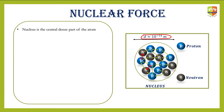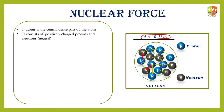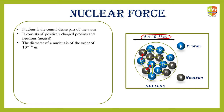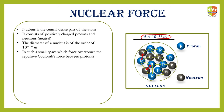The nucleus is the central dense part of the atom. Rutherford discovered the nucleus in the late 19th century, where it was figured out that every atom has a very dense part in the center called the nucleus. It consists of positively charged protons and neutral neutrons. The diameter of a nucleus is 10 to the power of minus 14 meters. In such a small space, with lots of protons and neutrons confined together, there must be some force acting on each one of them to hold them together.